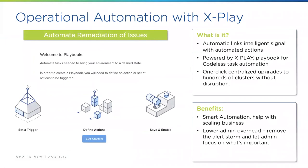In this new release of Prism Central, there is operational automation with xPlay — also called Cross Play. This is automated intelligent actions: no-code or low-code automatic playbooks for your infrastructure, with one-click centralized upgrades to hundreds of clusters without disruption. The benefits include smart automation to help scale the business and low admin overhead. You simply set your trigger, define the action, save and enable it, and the playbook will perform the necessary action such as adding memory or vCPUs.